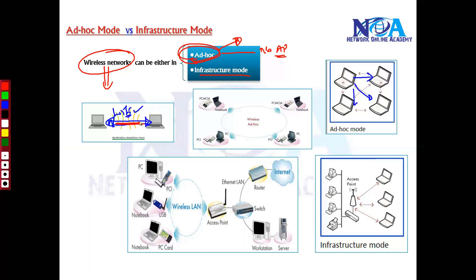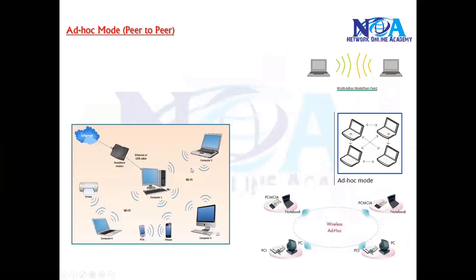In infrastructure mode we use an access point, meaning we connect all devices through a centralized device called an access point. This is more applicable especially when your network is bigger. Let's look at a few more details on the differences between them.